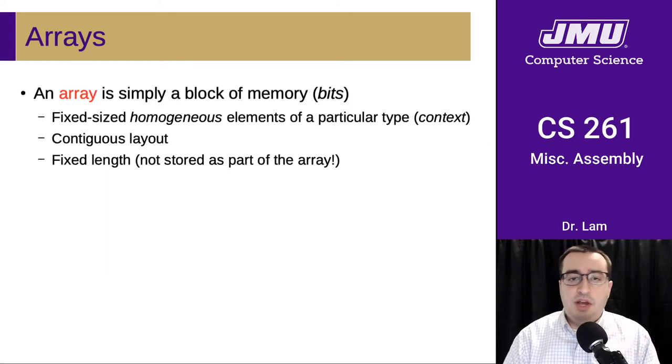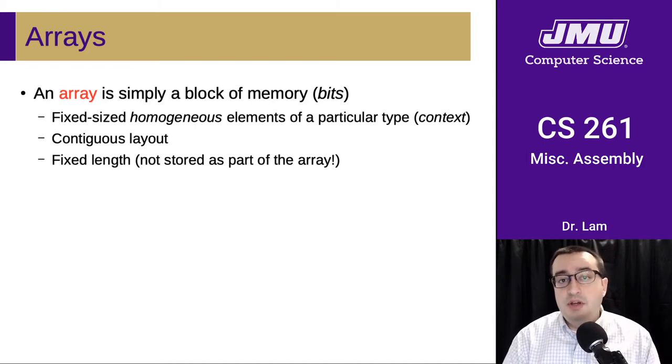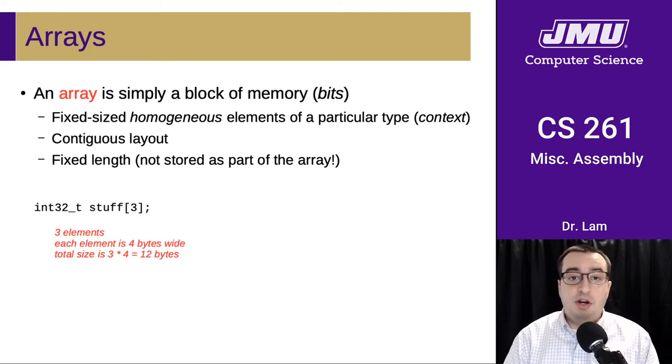Let's talk about arrays in assembly. As we said with C, an array is simply a block of memory, just a bunch of bits. In order for that to be useful, we need to know the type of the elements in the array, and that tells us how big those things are. That's the context. Unless we have bits and context, we don't have an array. Arrays are laid out contiguously and in general they are a fixed length, and that length is not stored as part of the array, so we have to store that somewhere else.